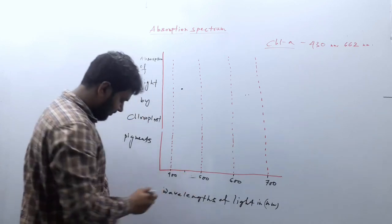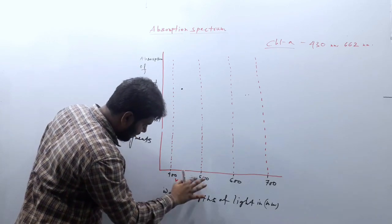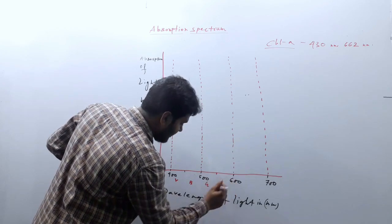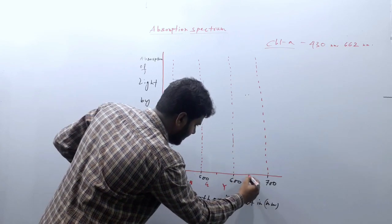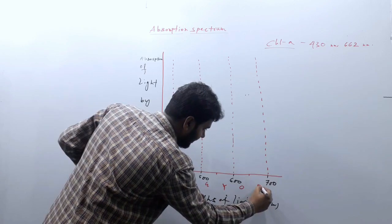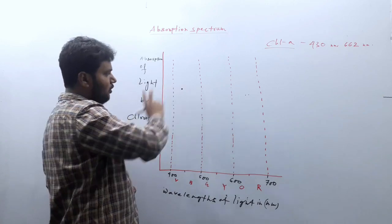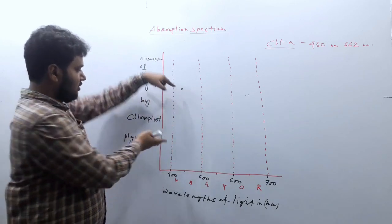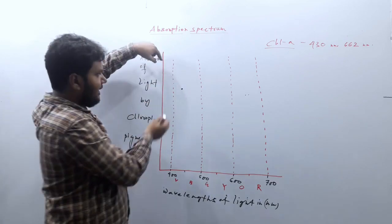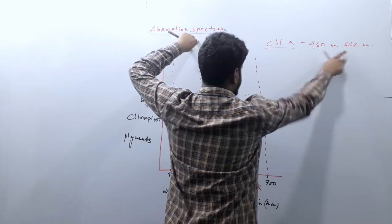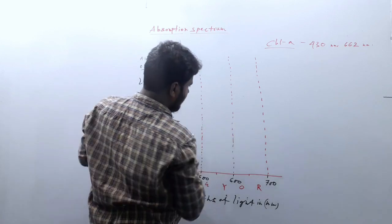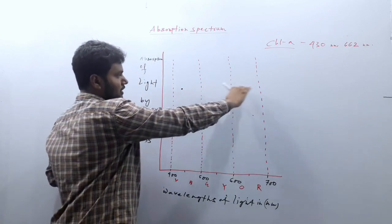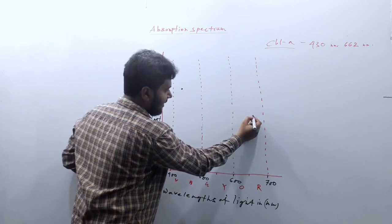This region will be violet, this region will be blue. 500 to 550 will be green, 550 to 600 will be yellow, 600 to 650 will be orange, and 650 to 700 will be red. So this 662nm peak is in the red region and the 430nm peak is in the blue region. Remember that chlorophyll A absorbs maximum amount of light in the blue region, so the height here will be lower than in the blue region.